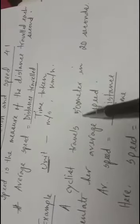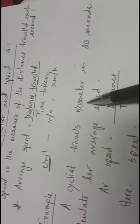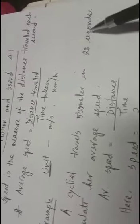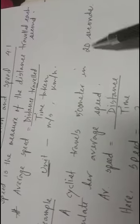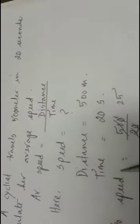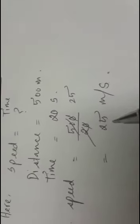From the statement it is clear that the cyclist travels 500 meters in 20 seconds. This 500 meters is the distance that she travels and these 20 seconds is the time that she takes. So just put 500 meters in the place of distance and 20 seconds in the place of time. You will get the speed — 25 meters per second.